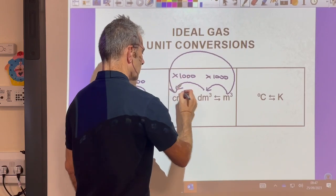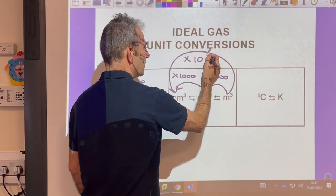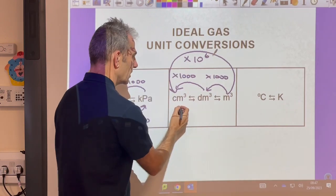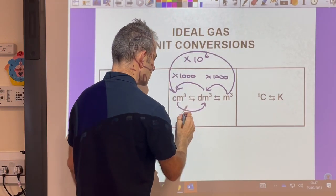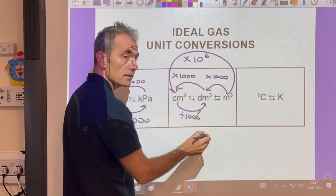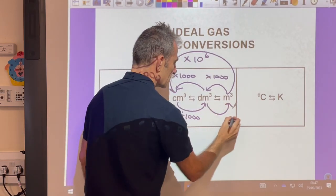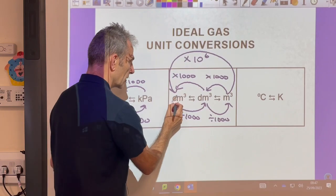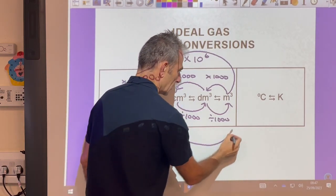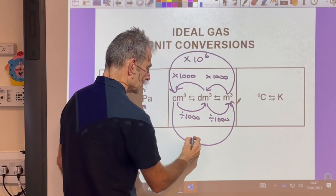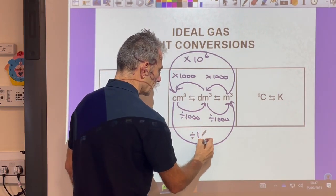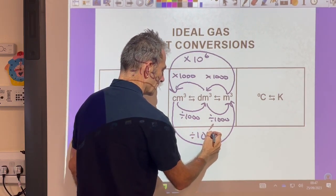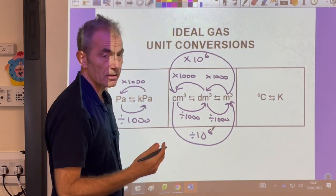Going the other way now: cm³ to dm³, divide by a thousand. And dm³ to meters cubed, divide by a thousand. If you want to go all the way from cm³ to meters cubed, you divide by a million - divide by 10 to the 6, or multiply by 10 to the minus 6.